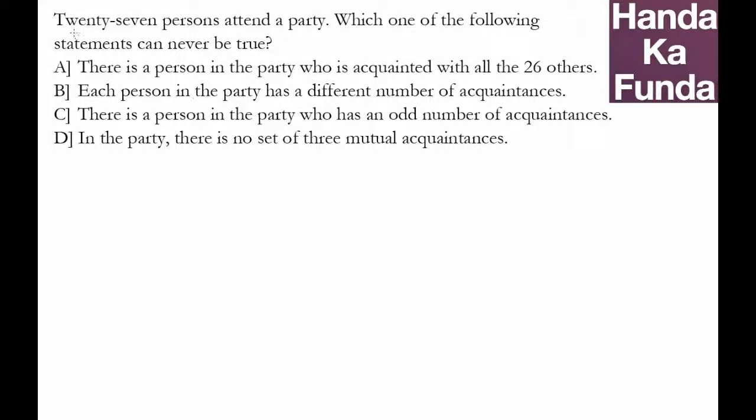In this particular question we are given 27 people attend a party. Which of the following statements can never be true? In this kind of question you can solve them by two ways: one is by eliminating the options, or you just check each and every option and see which one fits.